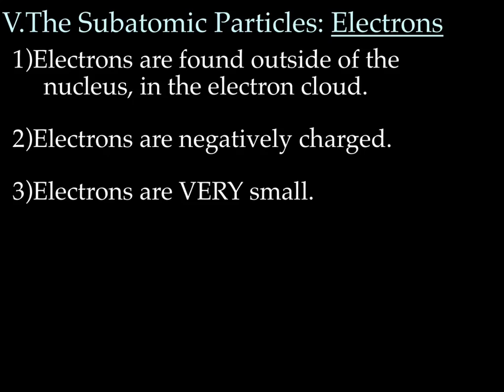The third subatomic particle is the electron. Unlike the proton and the neutron, electrons do not live in the nucleus — they are found outside the nucleus in the electron cloud. Electrons are negatively charged, and the symbol is e-negative. Electrons are tiny, 200 times smaller than a proton, and their mass is so small it's negligible. For example, if I get on a scale and it says 120, then I pick up a feather — the feather being the electron — the scale still says 120 because the feather is so much lighter it basically doesn't make a difference.